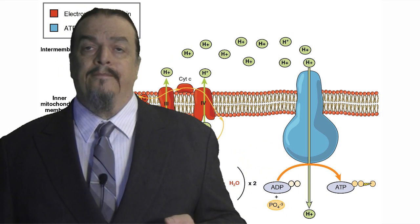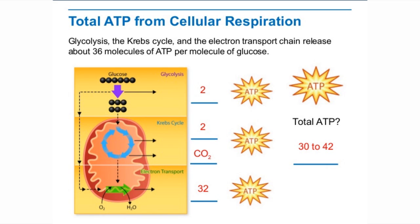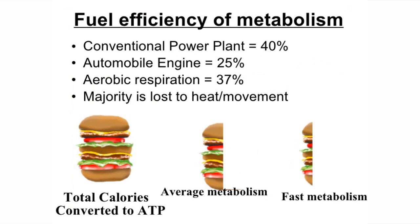This process nets the cell 32 ATP, so if we add the two ATPs from glycolysis and the two ATPs from the Krebs cycle, that makes 36 more ATPs per glucose molecule than we started out with in the beginning. This process is so efficient that it uses 36% of the energy of the glucose molecule and the rest of the energy is converted to heat. That's more efficient than most fuel sources.